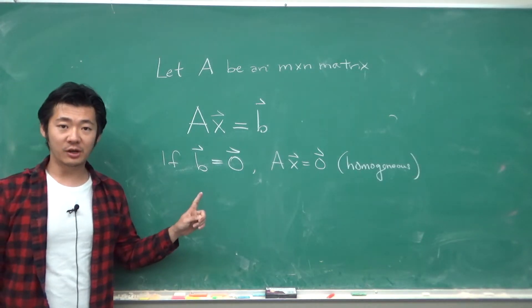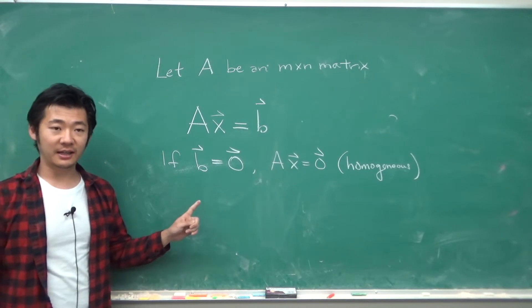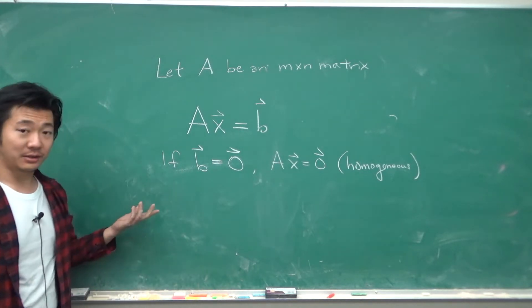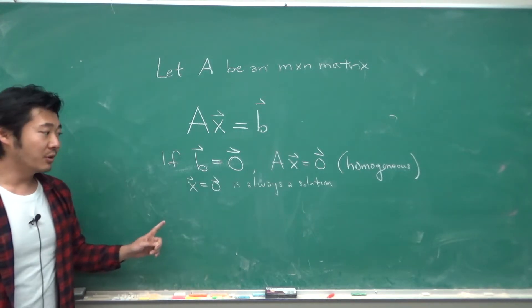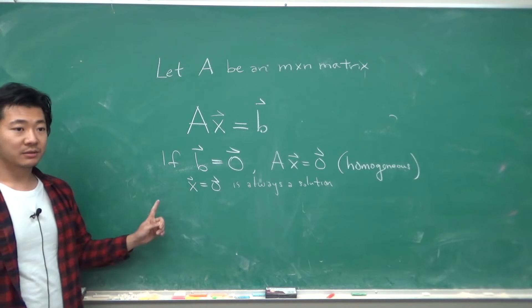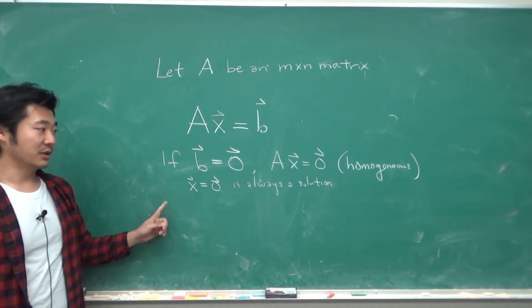A special property of a homogeneous equation is that it always has at least one solution, namely x equals 0. But sometimes, there's more solutions than just a 0 solution, which is what makes matrix equations special.